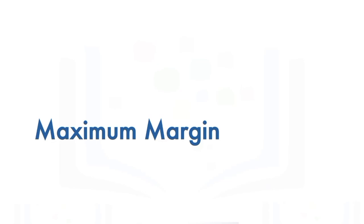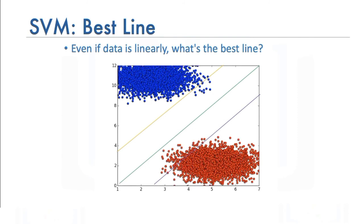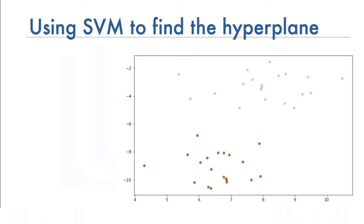SVMs work by finding the maximum margin. Which of the three planes do you think perform better in classifying the data? Intuitively, you would say the green line. You would be correct, as changes in the dataset caused by noise would not affect the classification accuracy of the green line. How do we find the best line?